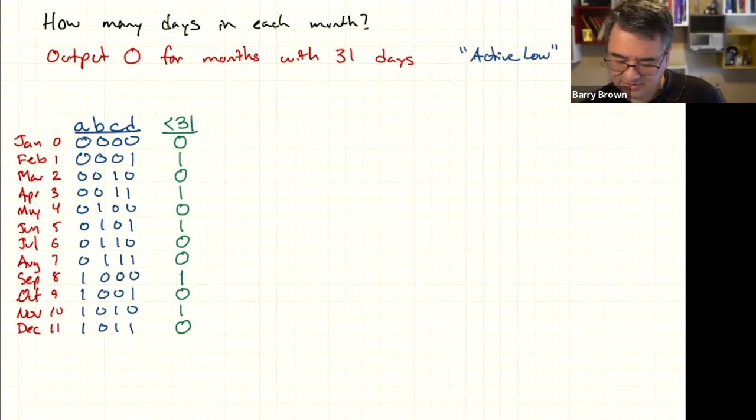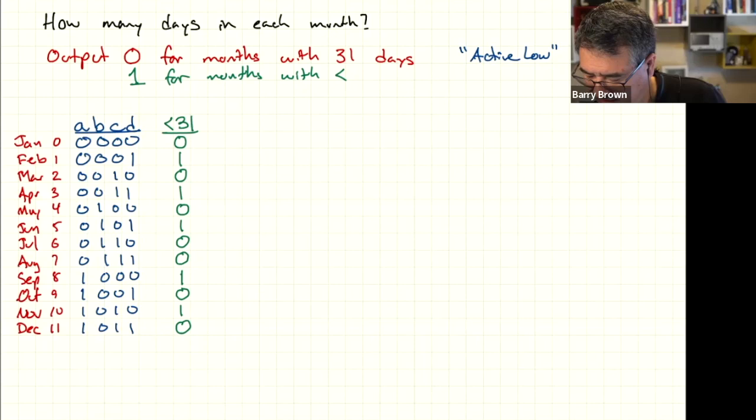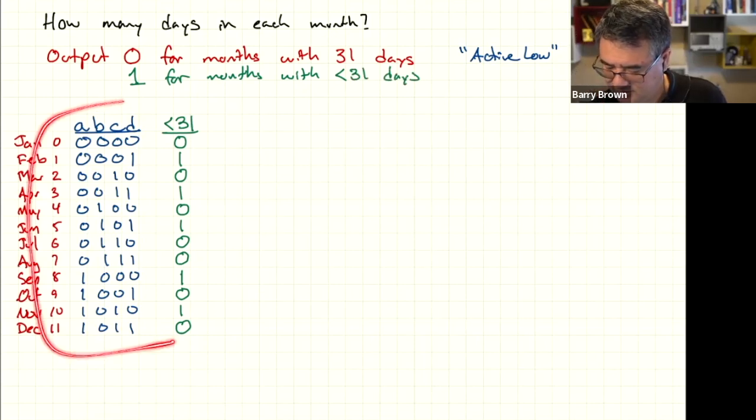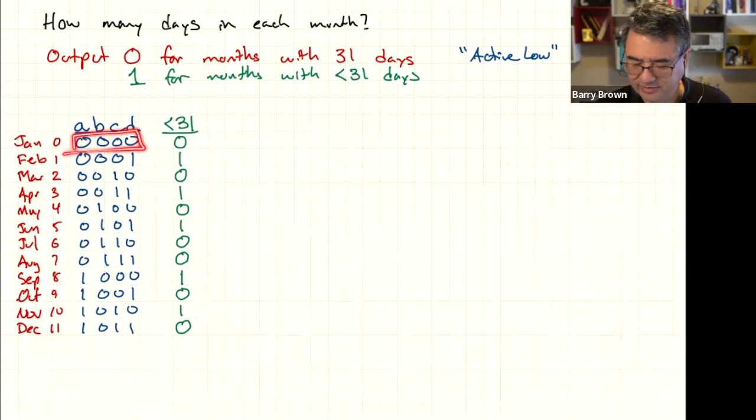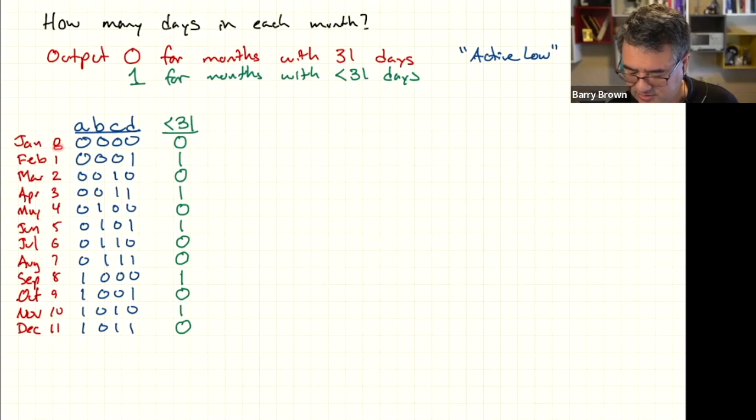So another way to state this is I want to output a one for months with less than 31 days. And so here is the truth table for that. I've got a binary number, a 4-bit binary number, representing the number of the month.